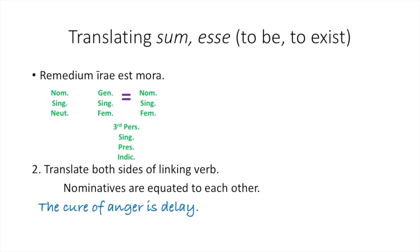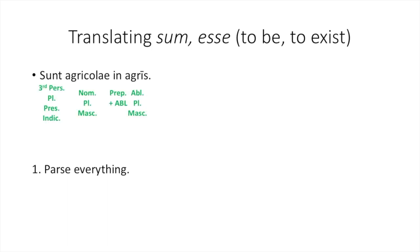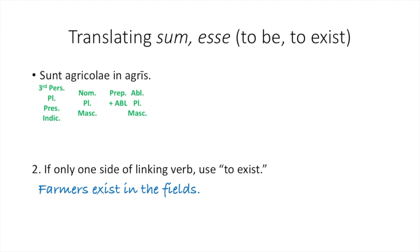Now, your verb sum esse can also mean to exist. Let's look at the example: sunt agricolae in agris. We follow the first step — parse everything — and you'll notice that there's only one side of the linking verb. There aren't two nominatives, or a predicate nominative. So you need to use the definition of sum esse meaning to exist. We can say that farmers exist in the fields, or if you want to make this sound a little more natural, there are farmers in the fields.